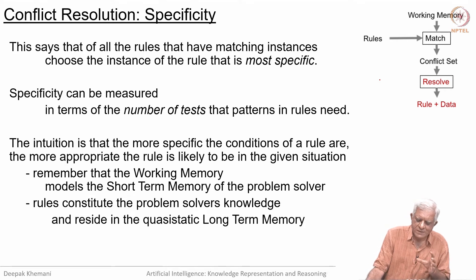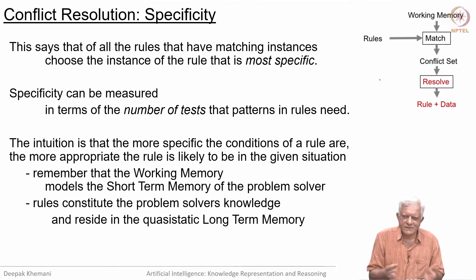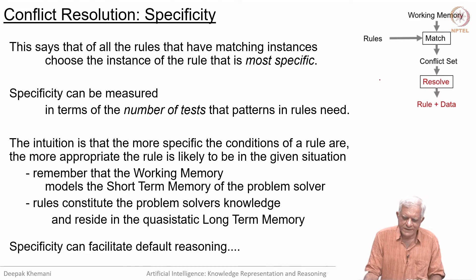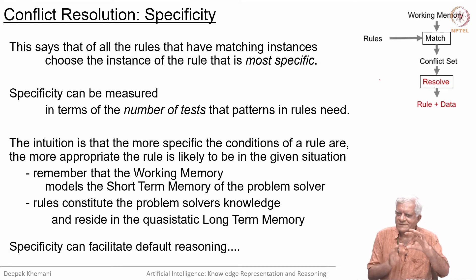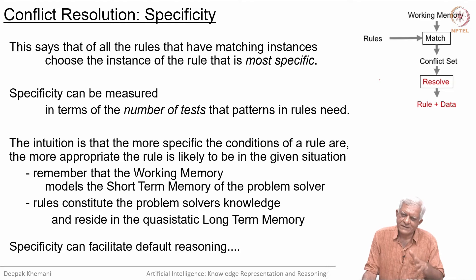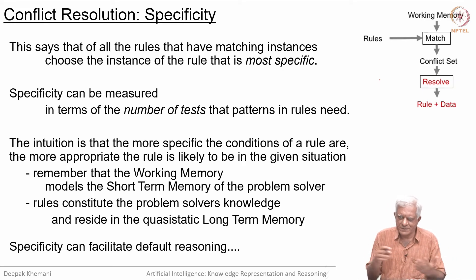Remember that working memory models the short-term memory of the problem solver, while rules constitute the long-term memory residing in quasi-static long-term memory — quasi-static because you are allowed to change rules, but in general when you have built a rule-based system it will be fairly constant. Choosing specificity as a conflict resolution strategy can facilitate default reasoning. In default reasoning, if you know some things you make an inference, but if you know more things you may make a different inference and apply the default only when you do not know the more specific stuff. For example, the default action might be to make a cup of tea at 5 o'clock, but if something else comes into play you may take a different action.